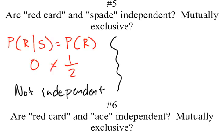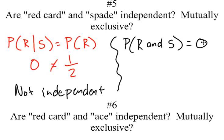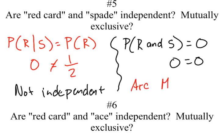Now, what about mutually exclusive? For mutually exclusive, I need to check if the probability of a red card and a spade equals zero. What is the probability of having a card that is both red and a spade? That probability is zero. So the event of red card and the event of spade are mutually exclusive, or disjoint.